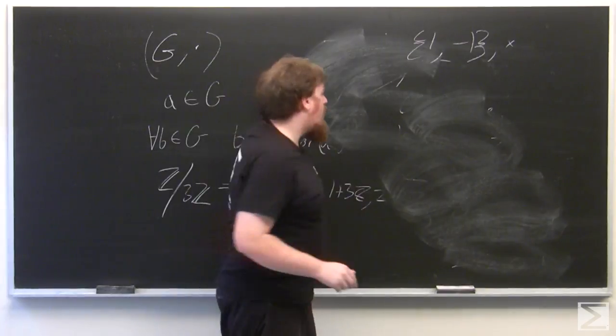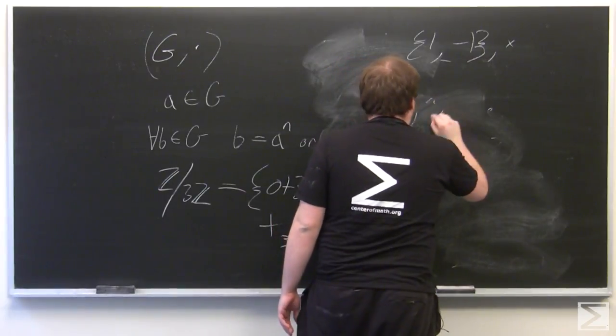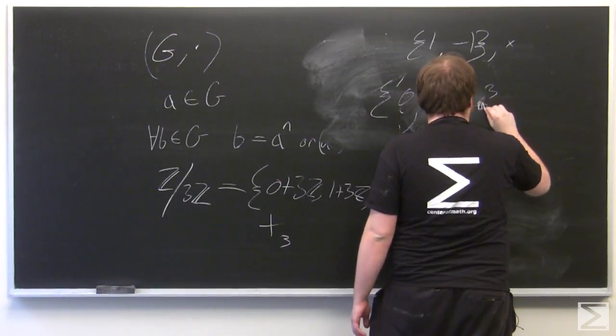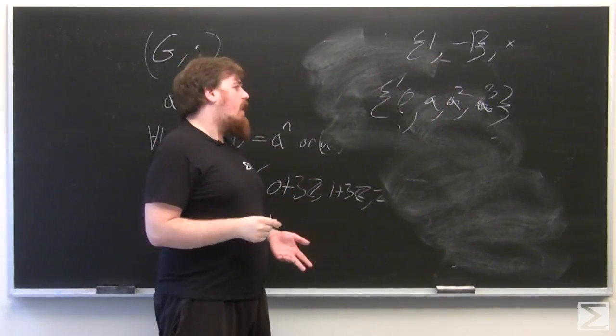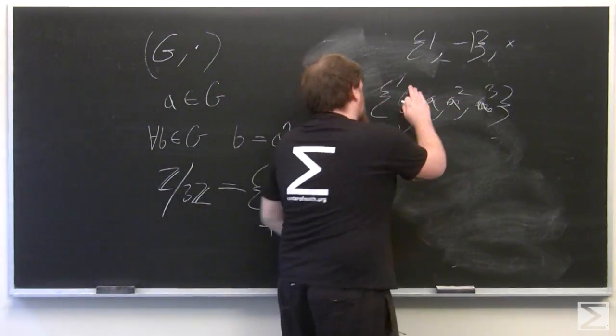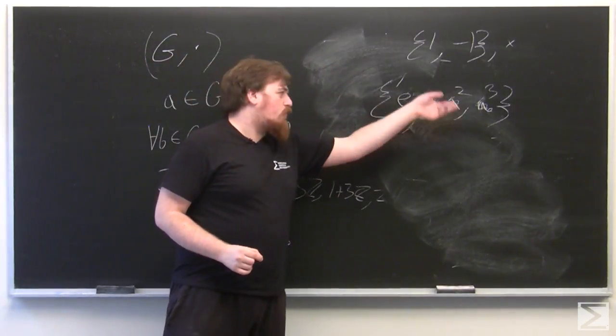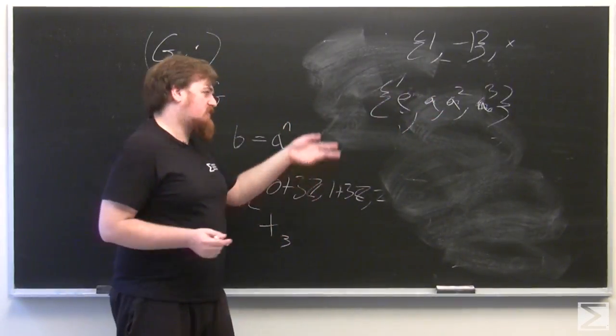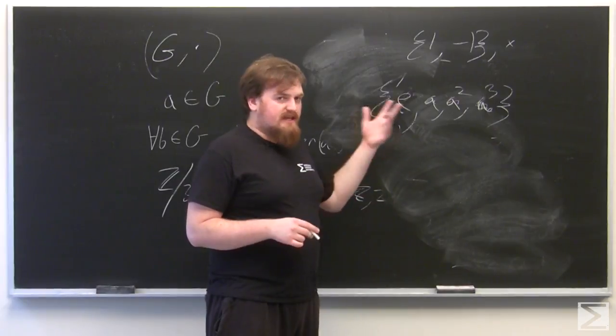We can have a more abstract setting, say 0, a, a squared, a cubed, under a multiplication where everything is natural except that a to the fourth is identified with 0, which would actually be e or 1 for a multiplicative group. So a to the fourth is equal to e, and then a squared times a cubed would be a to the fifth, but instead, since a to the fourth equals e, it's just a again. And so this is going to be isomorphic to Z mod 4Z, which is Z mod the subgroup of all elements which are divisible by 4.